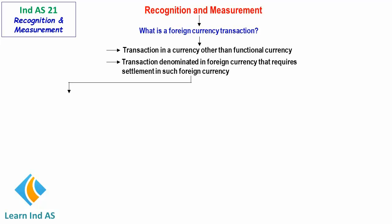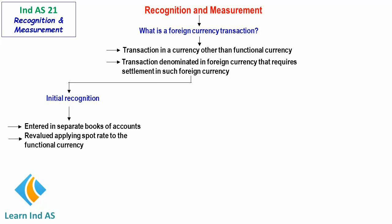Let us look at the requirements for recognizing a foreign currency transaction initially. First, the foreign currency transaction is entered in separate books of accounts. Then, the same is revalued by applying the spot rate to get the value in the functional currency of the entity.